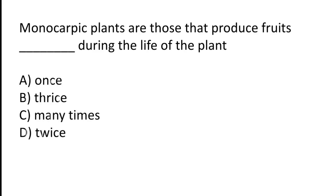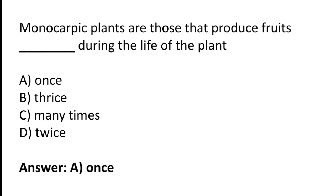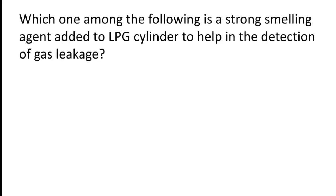Monocarpic plants are those that produce fruits how many times during the life of the plant? Options: once, thrice, many times, or twice? The correct answer is option A — monocarpic plants are those that produce fruits once during the life of the plant.